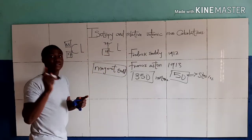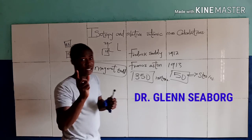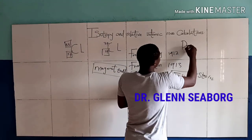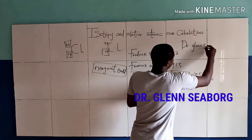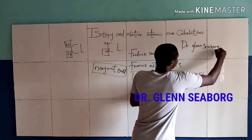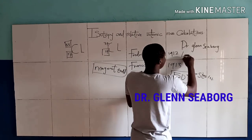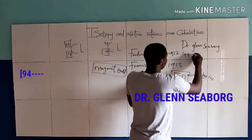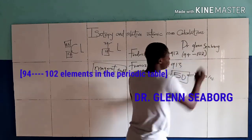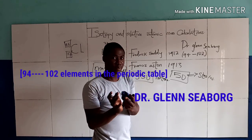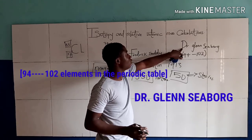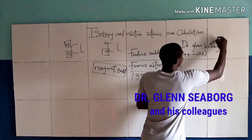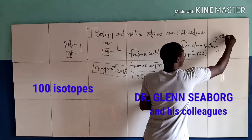Please take note that a man called Dr. Glenn Seaborg discovered elements from atomic number 94 to 102 in the periodic table. And Dr. Glenn Seaborg and his colleagues also discovered over 100 isotopes.